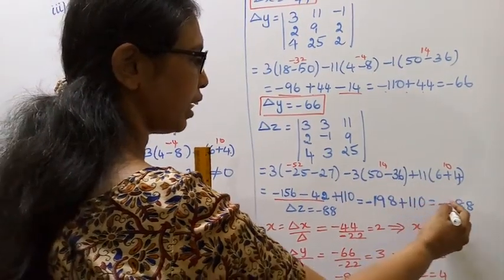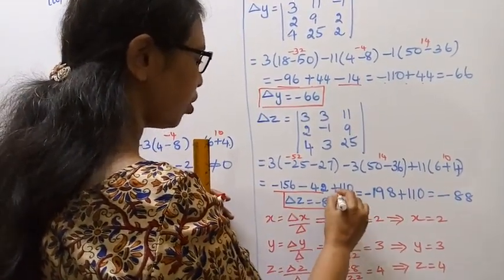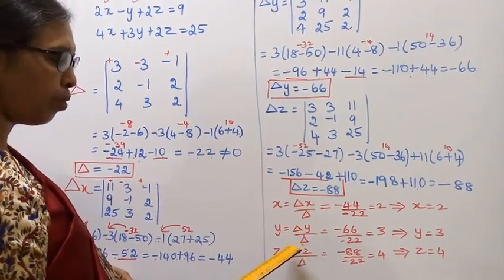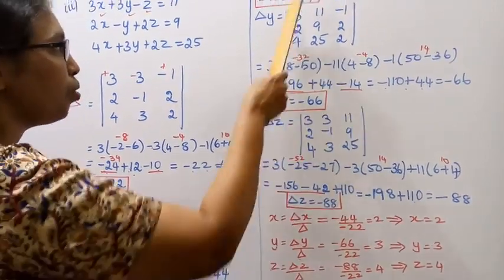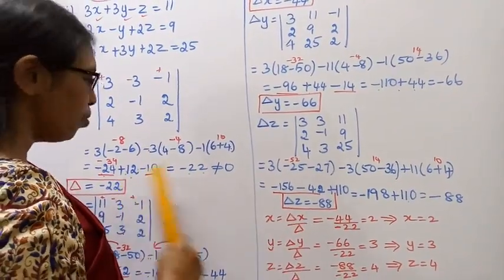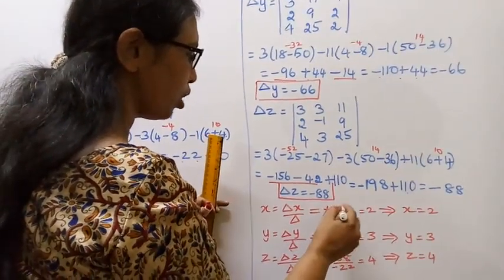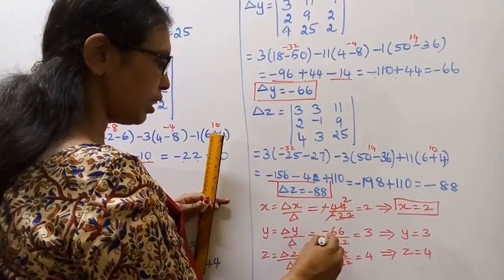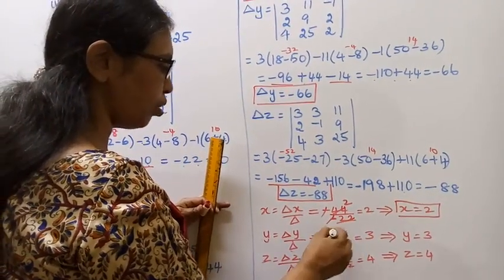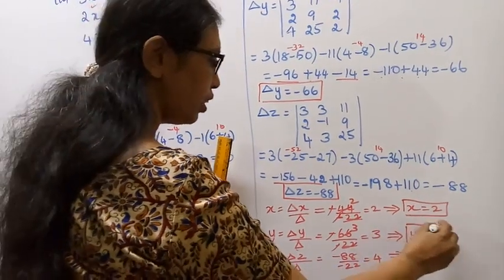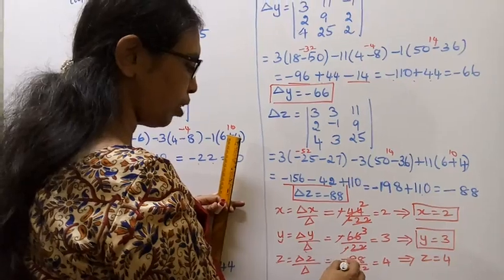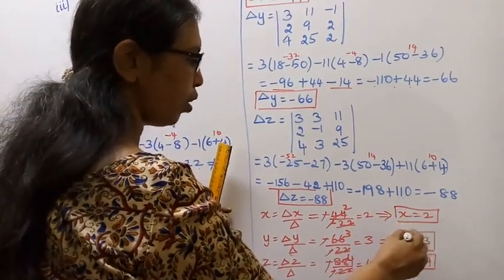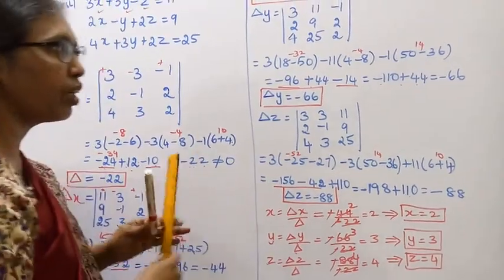Now solve x, y, z. X equal to delta x by delta, Y equal to delta y by delta, Z equal to delta z by delta. Delta x is minus 44 by delta value minus 22 - minus minus cancel, 22 into 2 is 44, so x equal to 2. Delta y by delta: minus 66 by minus 22, cancel, 22 into 3 is 66, so y equal to 3. Delta z by delta: minus 88 by 22, minus minus cancel, 22 into 4 is 88, so z equal to 4. X value is 2, y value is 3, z value is 4 by Cramer's rule.